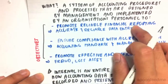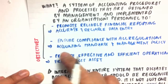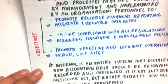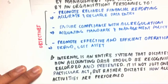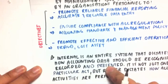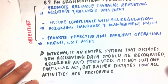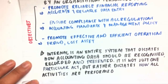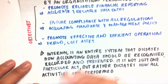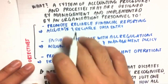So those are our three objectives for internal control: it promotes reliable financial reporting, ensures compliance with all our regulations, and promotes effective and efficient operations. Internal control is an entire system that dictates how accounting data should be recognized, recorded, and presented. It's not just one particular act — for example, having physical control of our cash like putting it into a safe. Rather, it dictates how we operate our whole company and all activities are performed in a way that promotes internal control over these objectives.